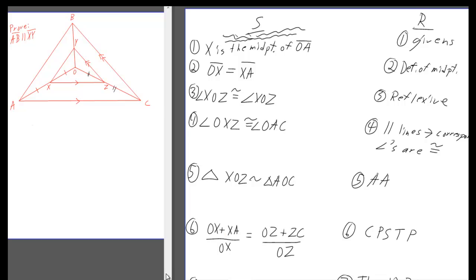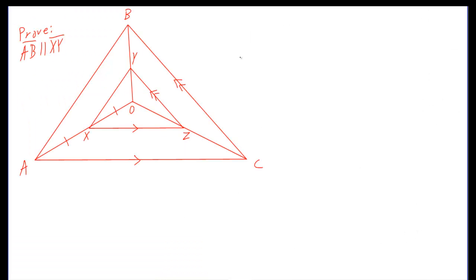So let's take a look at a fresh copy. The main idea here was they gave you a bunch of givens, everything that's over here was what they gave to you. The first thing you want to do is prove OXZ similar to OAC right there.